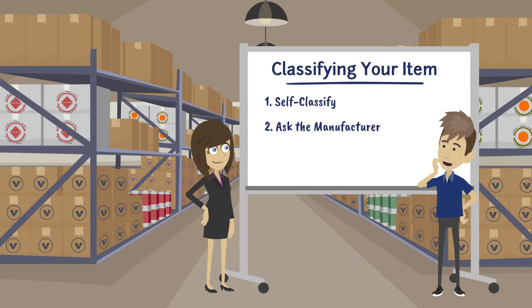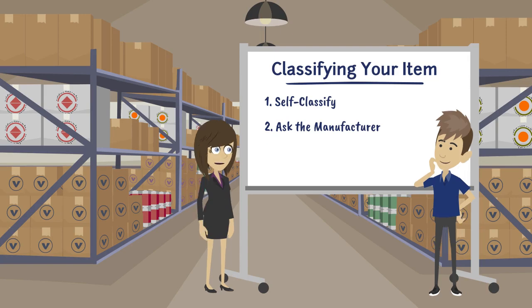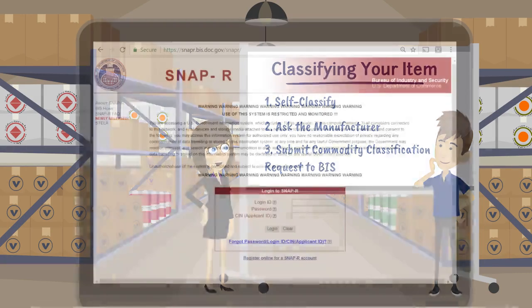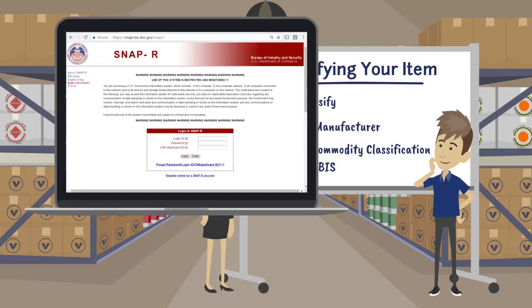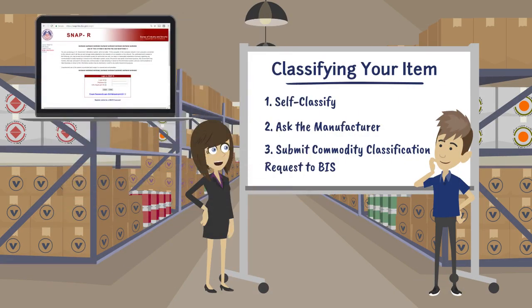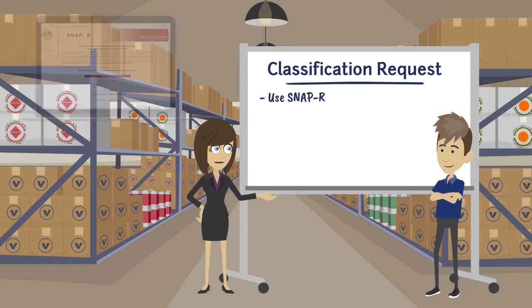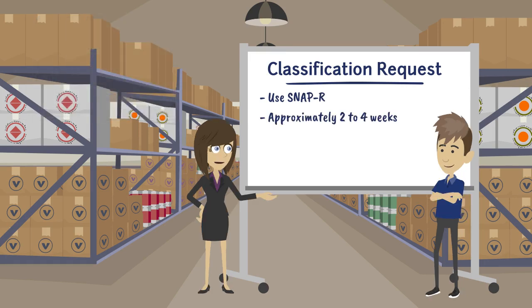If you're going nowhere with self-classifying or the manufacturer has no idea, you can always submit an online request to the Bureau of Industry and Security to classify the item for you. To do this, you will need a SNAP-R account — the same system used for submitting license applications. The commodity classification process takes, on average, two to four weeks. You can include up to six line items per request, and there is no fee for a classification request.